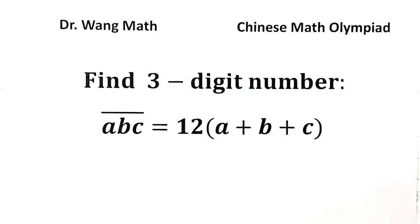In this video, we'll be solving a question from the Chinese Math Olympiad. The three-digit number represented by ABC satisfies the equation ABC = 12(A + B + C).